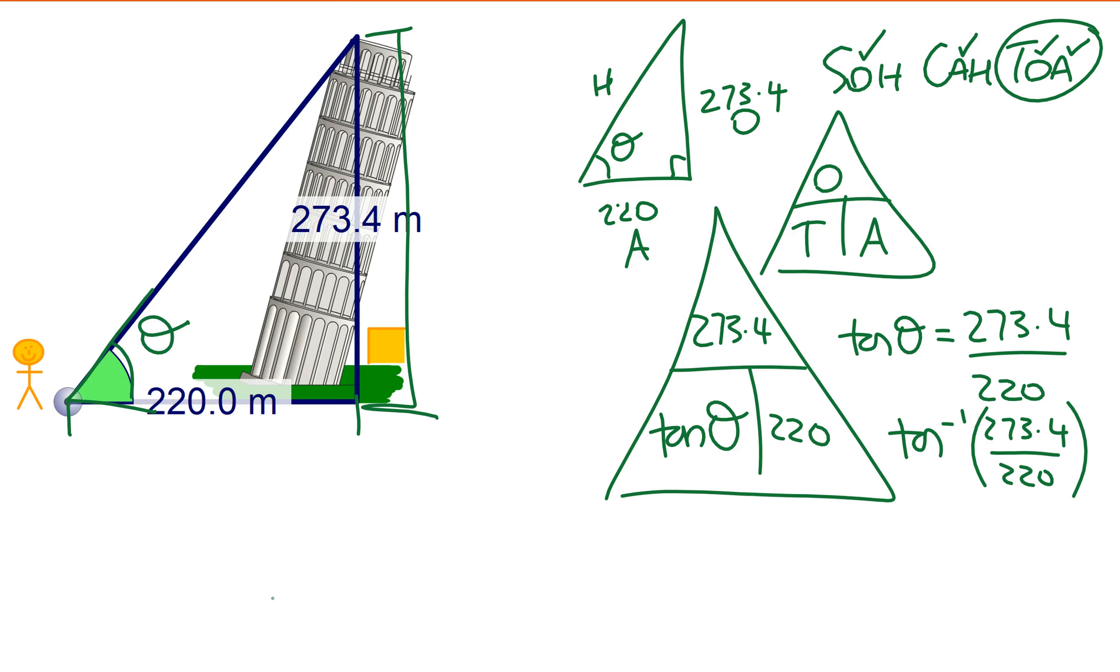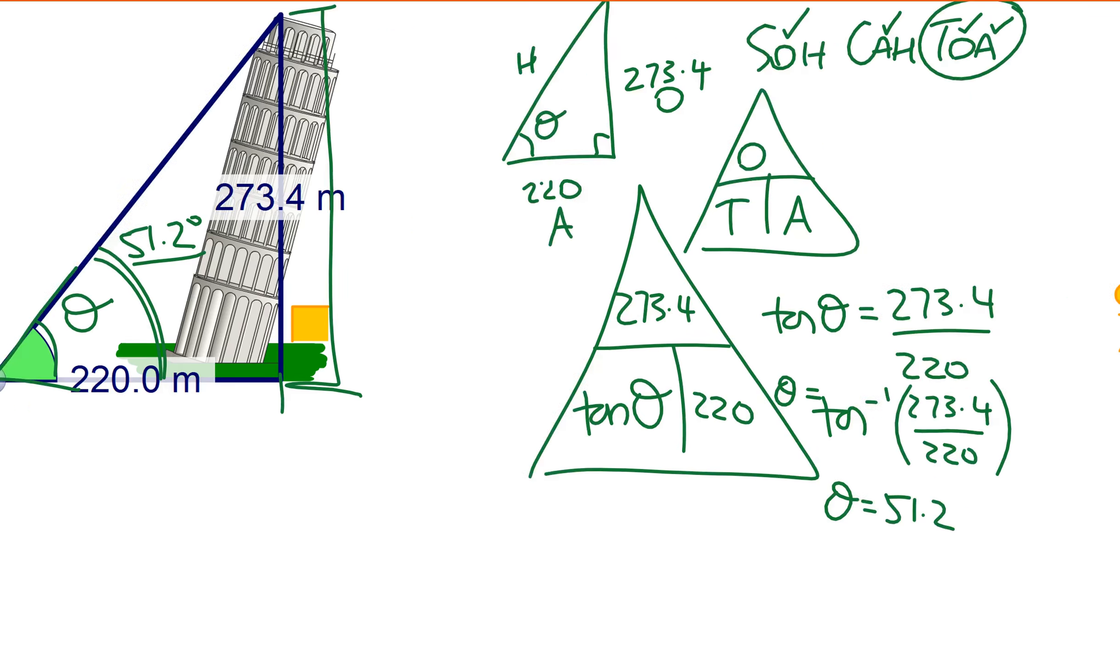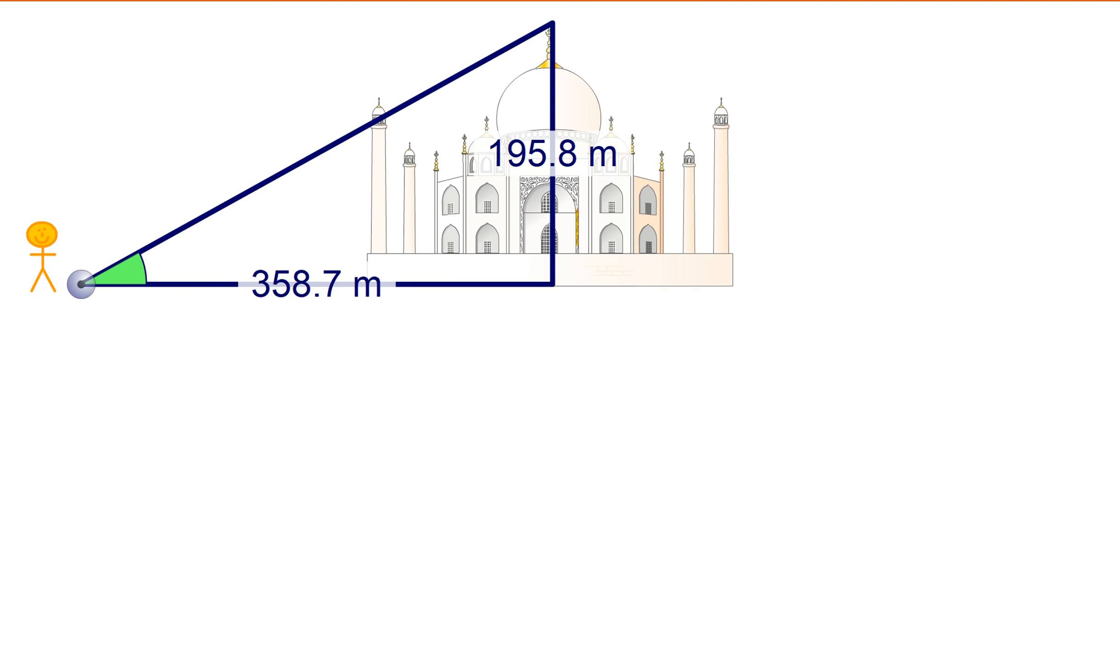So down here, theta equals 51.2 degrees. So that means the angle of elevation, that one just there, 51.2 degrees. Now did we do anything different besides pressing shift tan? That's the only thing. When finding an angle, shift tan, that's all you got to do. All right, well let's have a look at the second one. There is me again on my whirlwind tour of everywhere. I've found Taj Mahal, there it is, that's how tall it is, that's how far away I am. What is the angle of elevation? So I'm going to go through it just so you can do it quickly.